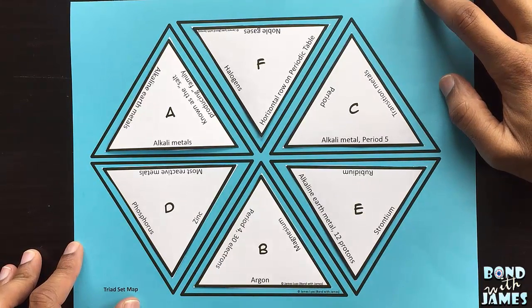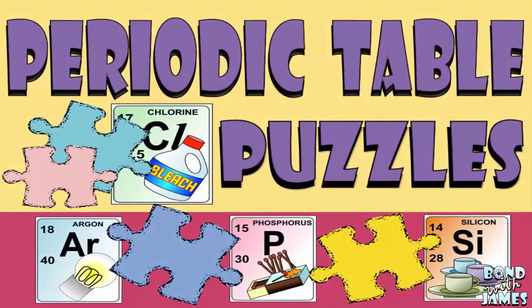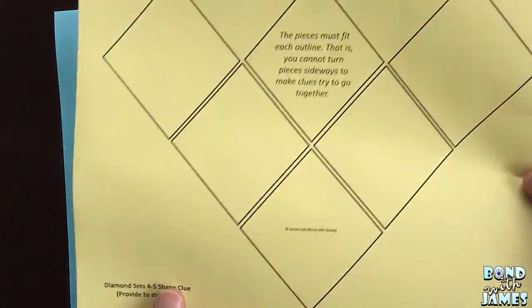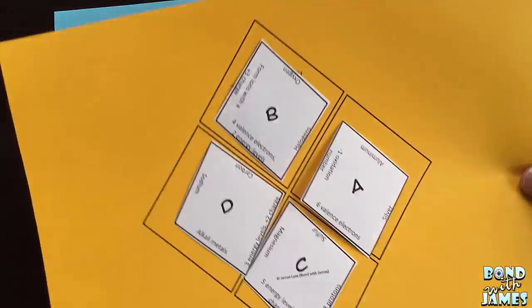This is James of Bond with James and this is the Periodic Table of Elements Tarsia Puzzle Set. There are four different Tarsia puzzle versions and within each version there are different number of sets.